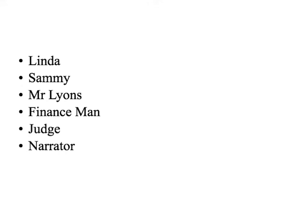There are other characters you'll need costumes for — Linda, Sammy, Mr. Lyons. Minor characters include the finance man, the judge, and the narrator. I really don't think they could ask you about the finance man or the judge because they only appear once. However, the narrator is a possibility, so we'll talk about that now.